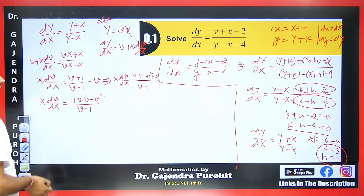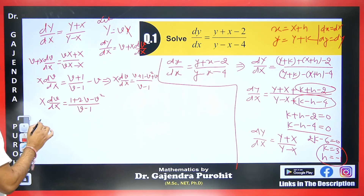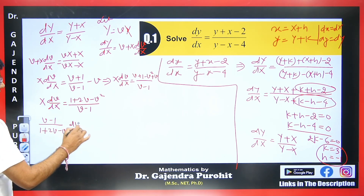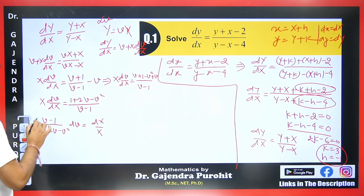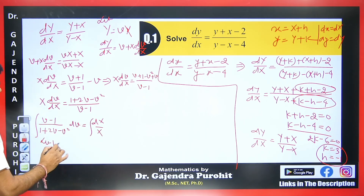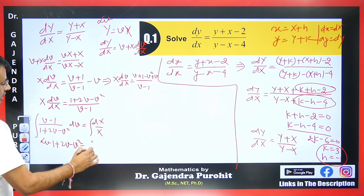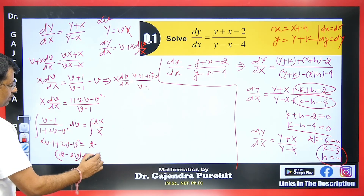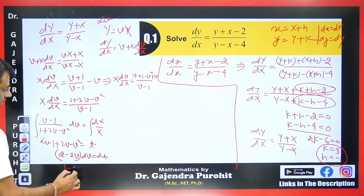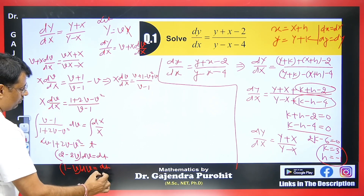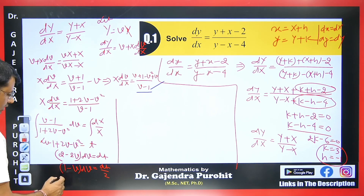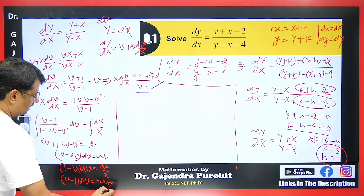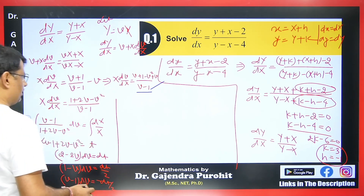Separating variables: (v - 1) / (1 + 2v - v²) dv = dX/X. Now let t = 1 + 2v - v², so dt = (2 - 2v)dv = 2(1 - v)dv, meaning (1 - v)dv = dt/2. Since we have (v - 1) = -(1 - v), we get -(1 - v)dv = -dt/2. Substituting, the left side becomes -dt/(2t).